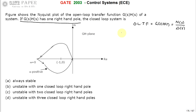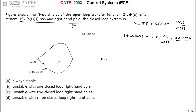Now let us consider the characteristic equation, which is 1 plus G(S)H(S). Writing this out: 1 plus G(S)H(S) equals 1 plus N(S)/δ(S), which simplifies to [δ(S) plus N(S)] divided by δ(S). This is equation 1 for G(S)H(S) and equation 2 for 1 plus G(S)H(S).